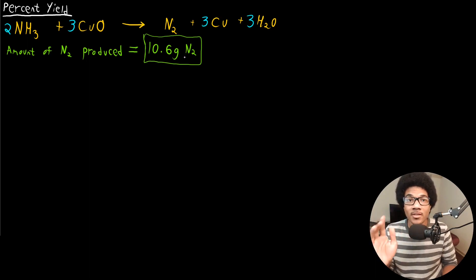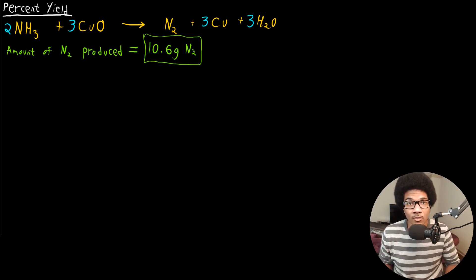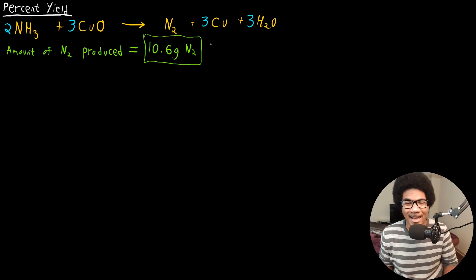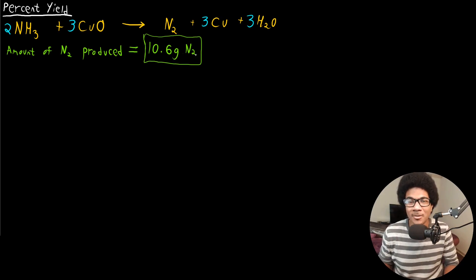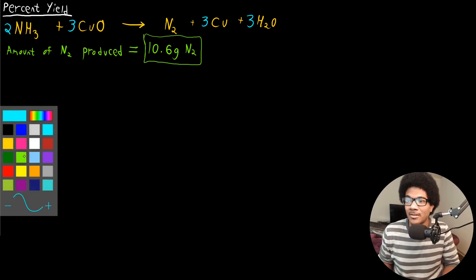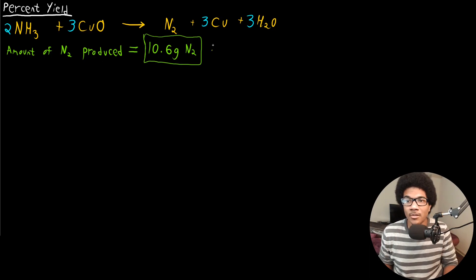When we're doing these calculations, we're assuming that all of the limiting reactant is consumed in the reaction. That is not always the case in reality. This calculation, assuming all of the limiting reactant is consumed, is what we call the theoretical yield.